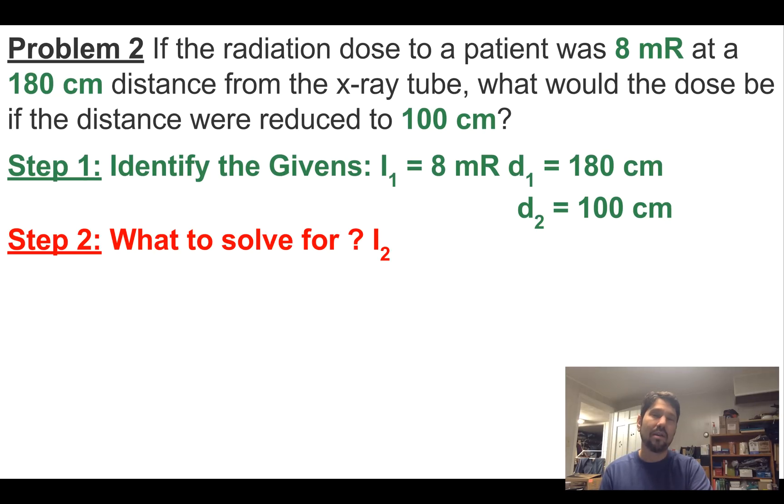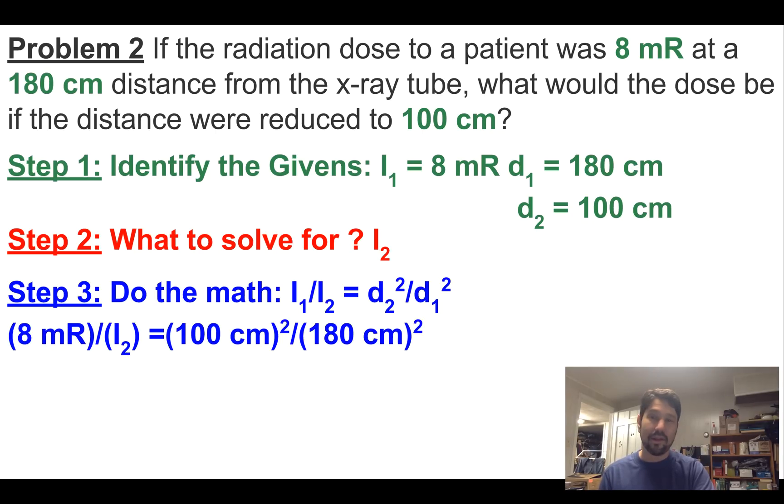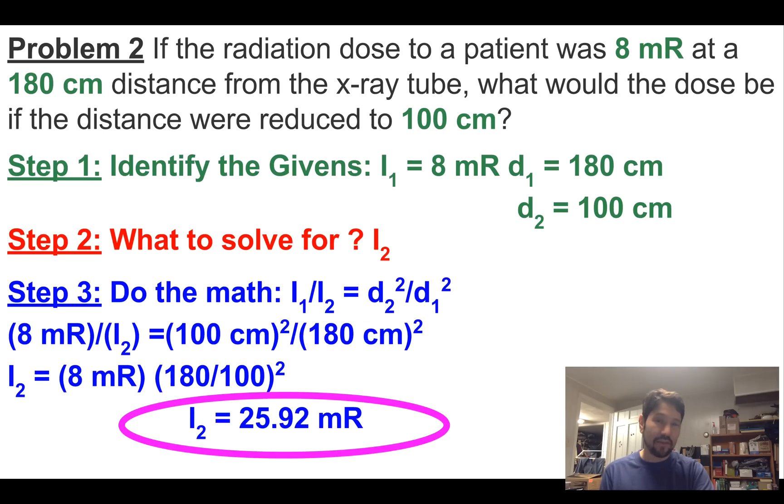We can work these backwards. I could give you intensity one and D1 and say, what distance would you have to decrease to make intensity two equal five millirads? So be alert, I can give you any three of the four variables and ask you to solve for the other one. So here we'll do the math. We plug in eight millirads over I2 equals 100 centimeters over 180 centimeters. And we flip it around and we come up with 25.92 millirads.